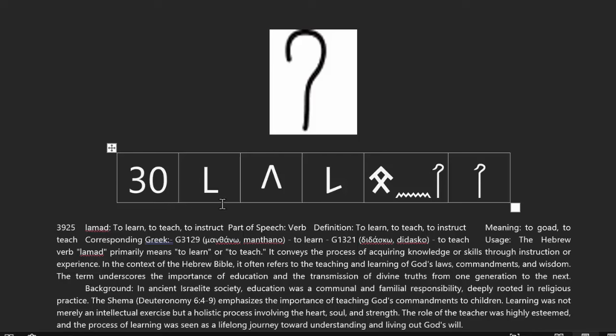They rotated it 180 degrees and then removed part of the crook to make it more of a right angle. But notice that Lamed means to learn — it's actually a verb that means to learn. Whereas before you thought it was just a crook or a goad, that's just the symbolism. The letter itself means to learn — learning, teaching, instructing, just as the shepherd does with the crook to the sheep.